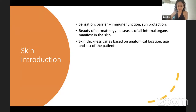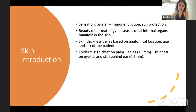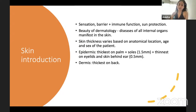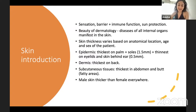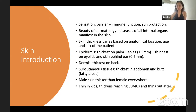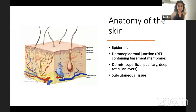Skin thickness varies based on anatomical location, age, and sex. The epidermis is thickest on the palms and soles, and thinnest on the eyelids and behind the ear. The dermis is thickest on the back, and subcutaneous tissue is thickest where there's the most fat — the abdomen and buttocks. Male skin is typically thicker than female skin, and skin is thinnest in children, thickens until middle age, then thins thereafter.